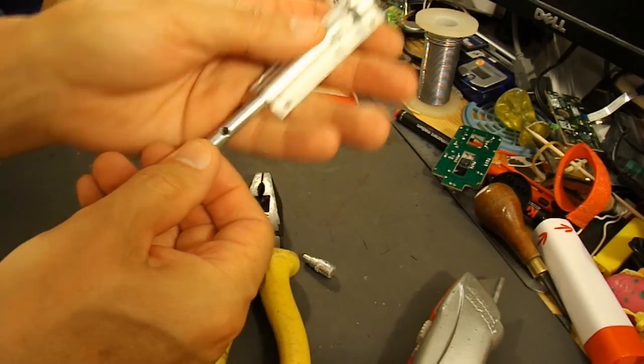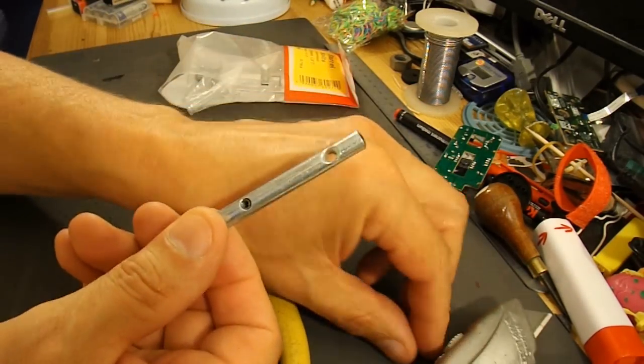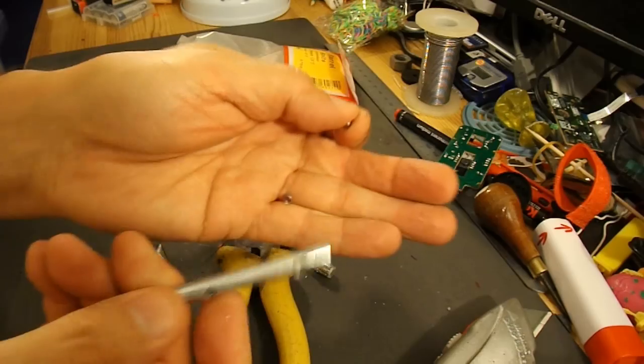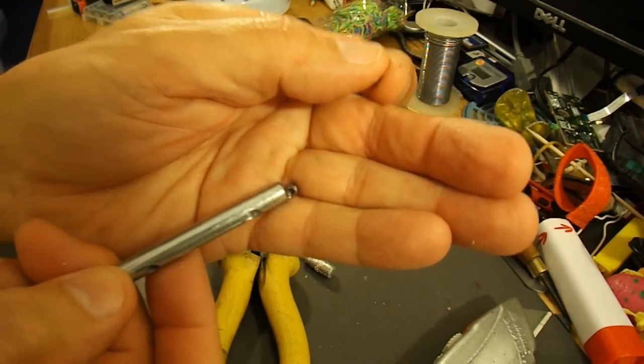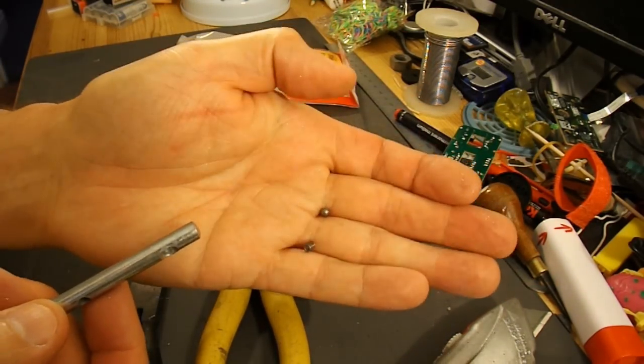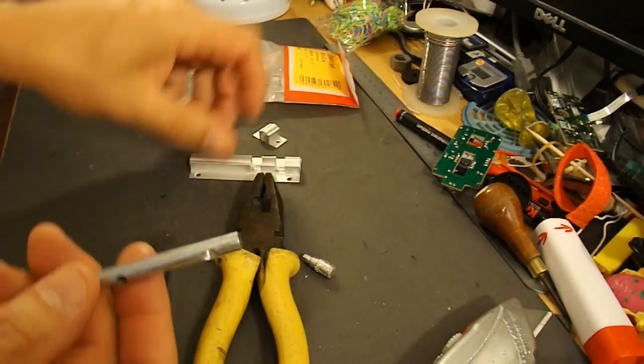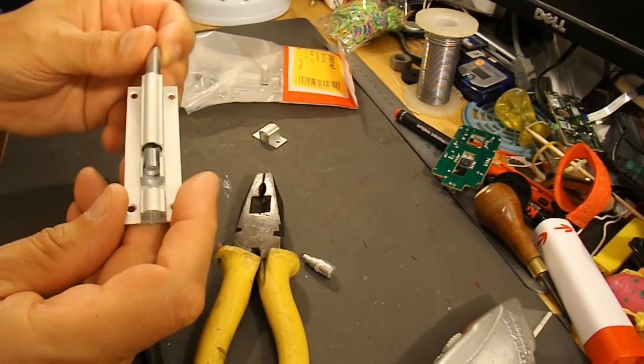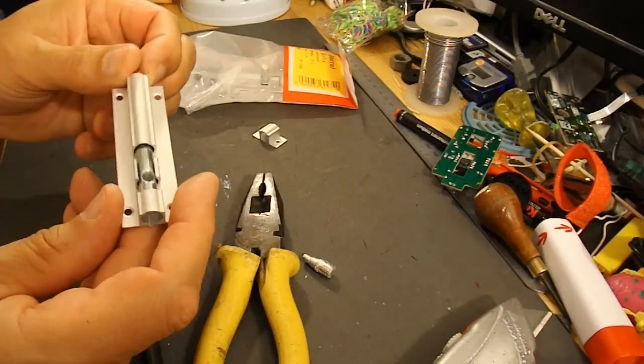I thought we should now be able to get it out. There we are. So that's just a little spring-loaded ball bearing. That's the spring, that's the ball bearing. So that now slides in and out easily.